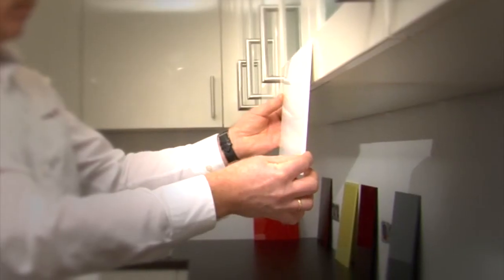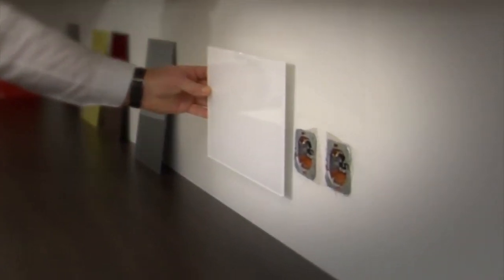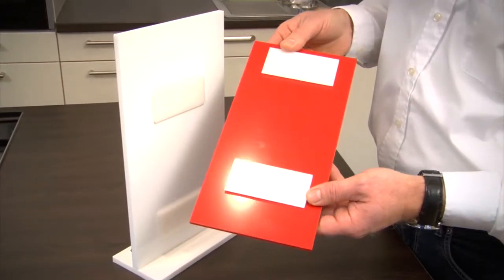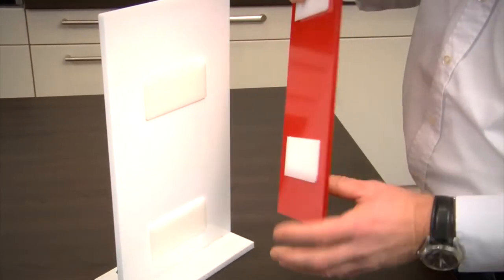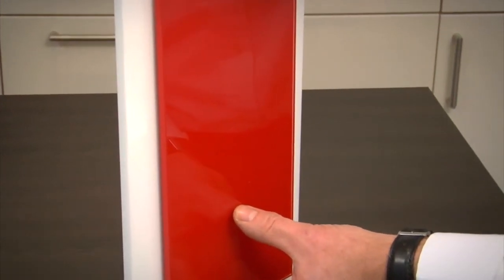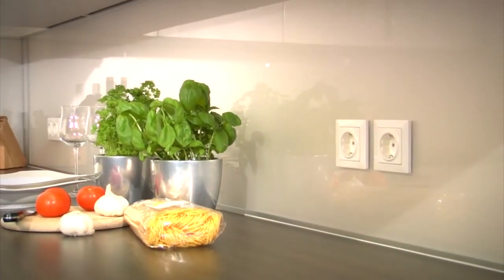For mounting the acrylite high-gloss sheet, different possibilities can be considered. This is the first option: you have an acrylite high-gloss sheet and on the back there are small pieces of acrylite and the same on the wall. Both are beveled so you can simply push them together for a seamless installation between the countertop and the wall.